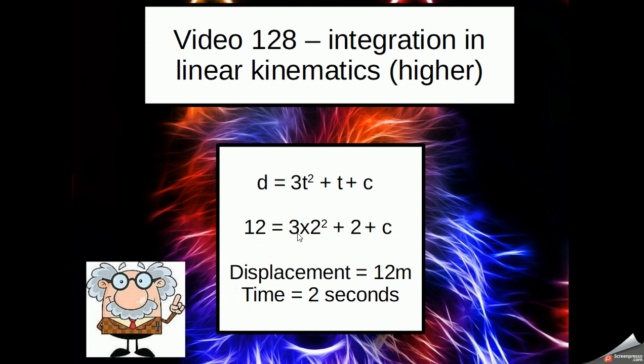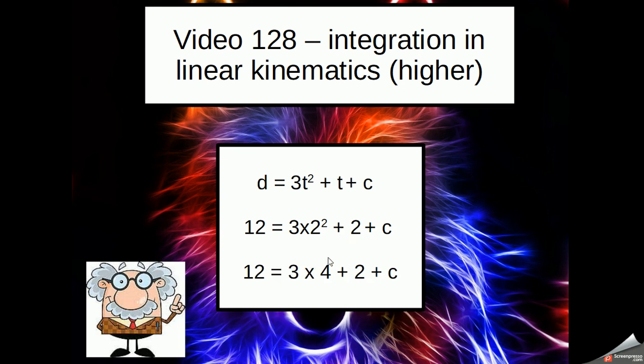So it becomes 12 is equal to 3 times 2 squared plus 2 plus the constant that we don't know. Simplifying that down, the 2 squared becomes 4, and then the 3 times 4 becomes 12.